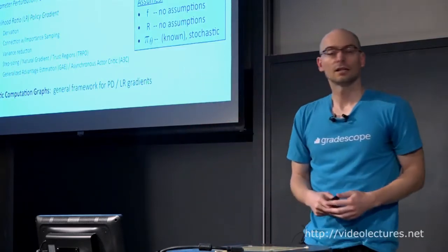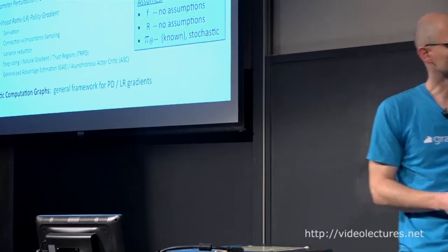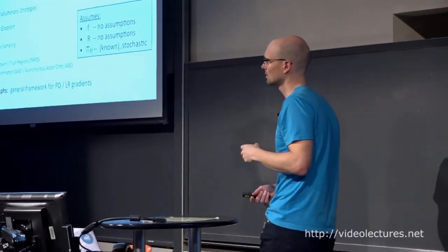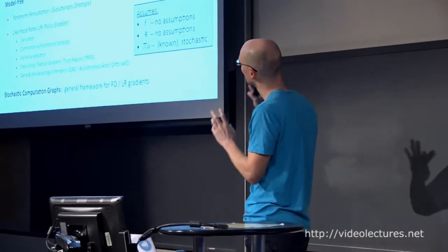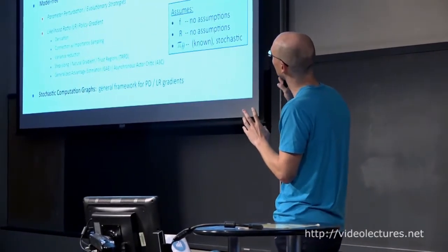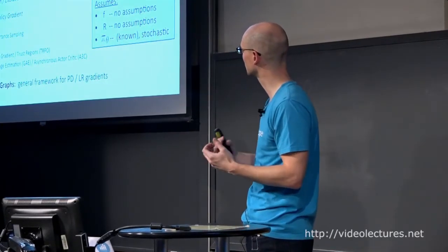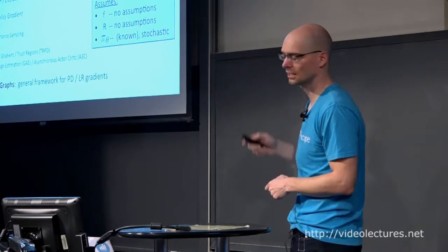In terms of outline for this lecture, we'll look at model-based methods first. It's often not what people think of when they say policy gradient methods, but we'll see them first. People have had a hard time getting these to work as well as the other ones, but there's also a strong belief that model-based methods in the long run could be more sample efficient. Then we'll look at model-free methods, and at the end we'll do something that brings them both together through the stochastic computation graphs framework.